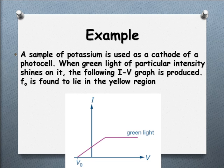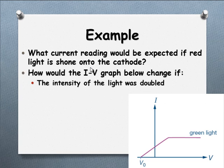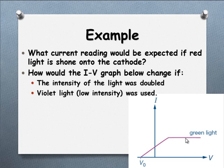Example: we have a sample of potassium with green light at a particular intensity. The threshold frequency F₀ is in the yellow region. Green is higher frequency than yellow, so photoelectrons will be produced. If you shone red light on the cathode — red is lower frequency than yellow — you'd expect no photoelectrons to be released, as it's below the threshold frequency. If the intensity is doubled, we expect the same V₀ but double the current. If we use violet light at the same low intensity, we'd expect the same current but a larger stopping voltage, since violet is a higher frequency and higher energy.